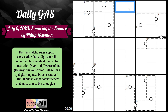The next part is killer cages. Digits in cages cannot repeat and must sum to the total given. So for example, a 5 cage means that the two digits in this little outlined area must sum to 5. That's it for the rules - let's just get right into it.